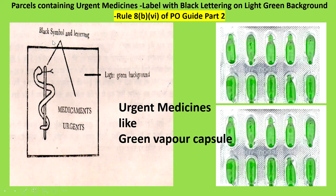You can see the image here — it is a black symbol and lettering is in black. Whenever the parcel contains urgent medicines addressed to a foreign country, you have to label the outer part with black lettering on a light green background. The label's color should be light green background. How to remember this easily? I have given you the image of green vapor capsules, which are urgent medicine — everyone might have used them in the COVID period. Green capsule equals urgent medicine, so you can easily remember.